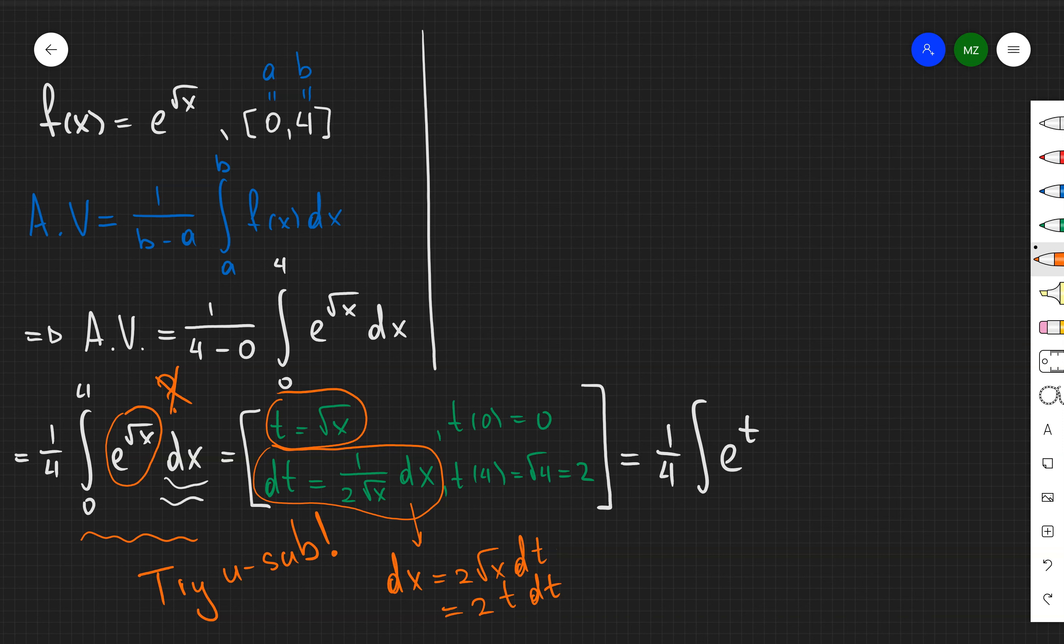So that's why I'm going to just write that I have e to the t times 2t dt. And here I'm going to put my boundary points. And again, 2 is going to get cancelled out. So I'm going to have 1 half of integral between 0 and 2 of t e to the power of t dt.